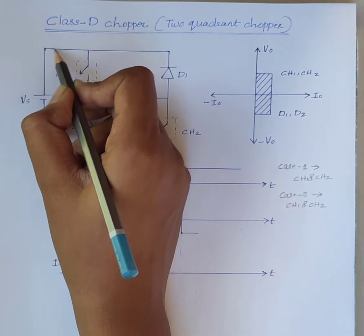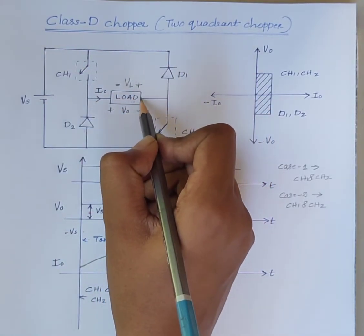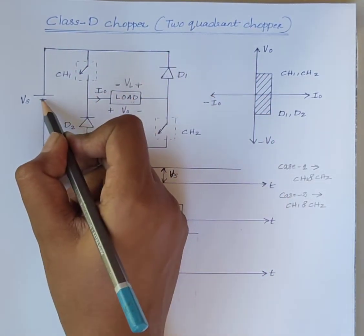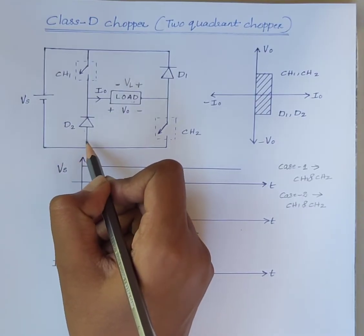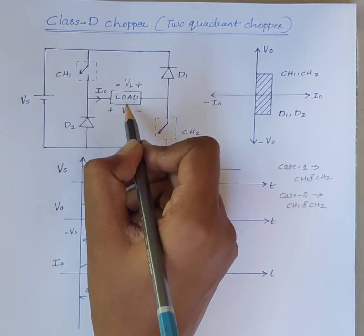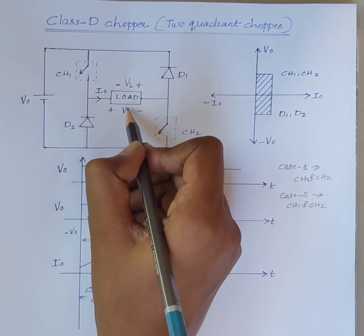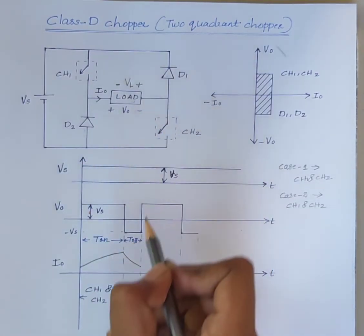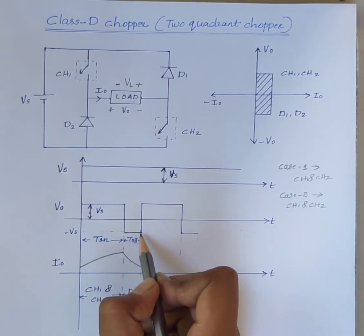Also, the positive terminal of the source voltage is connected here and the negative terminal is connected here. Therefore, the output voltage V0 is minus VS. The output voltage is negative.